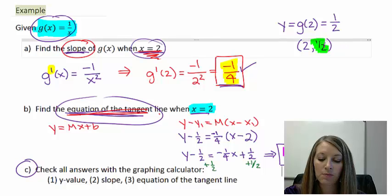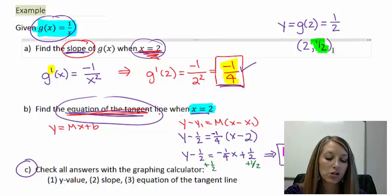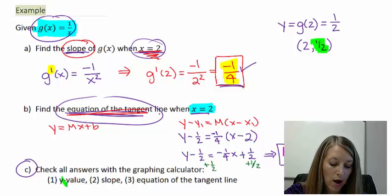0.5 is, of course, the same thing as 1 half. So there, that checks our y value to confirm that we have that correct.